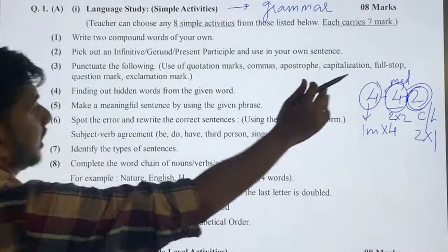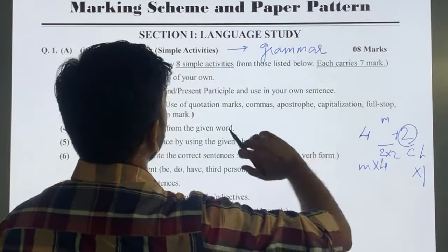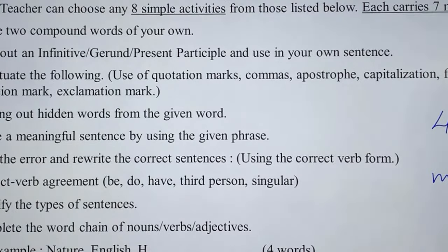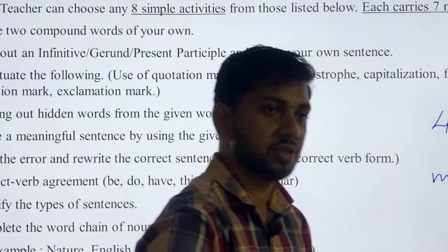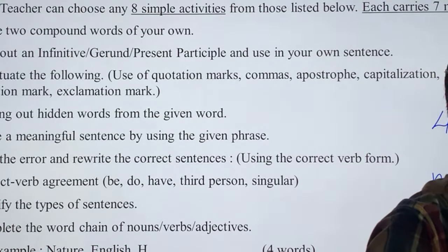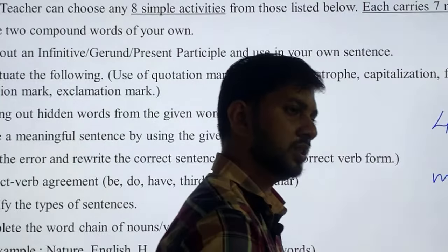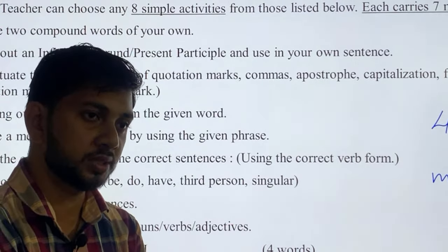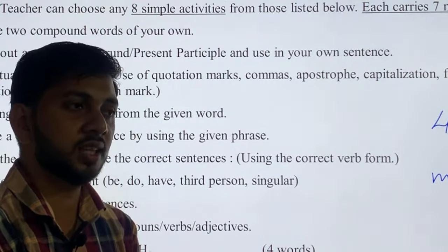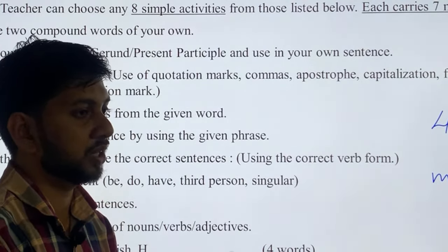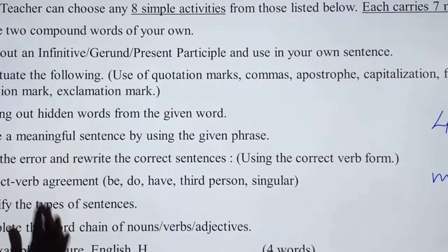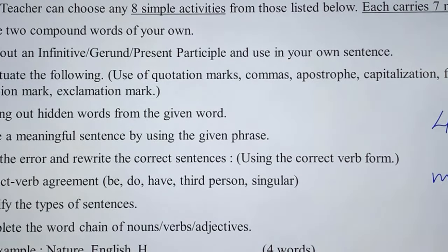Let's see what questions we can get in each set. For 1 mark questions, I want you to be thorough with compound words — remember at least 2 compound words. A compound word is a combination of 2 words, for example 'moonlight' — moon and light, both having their individual meaning. Or 'rainbow' for that matter. So remember at least 2 compound words and be ready with them.